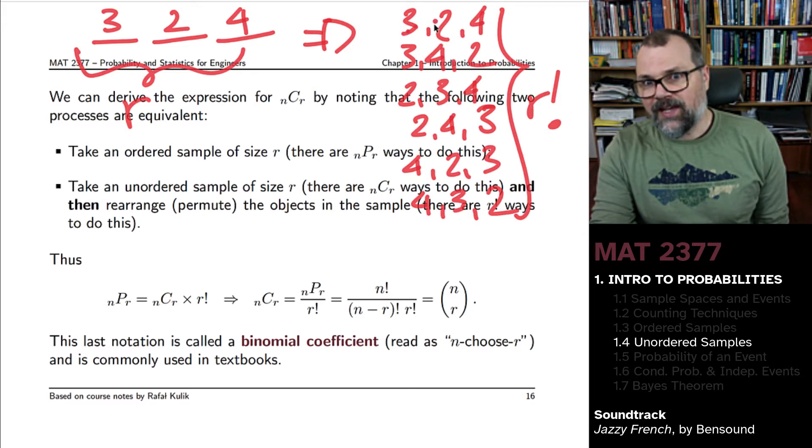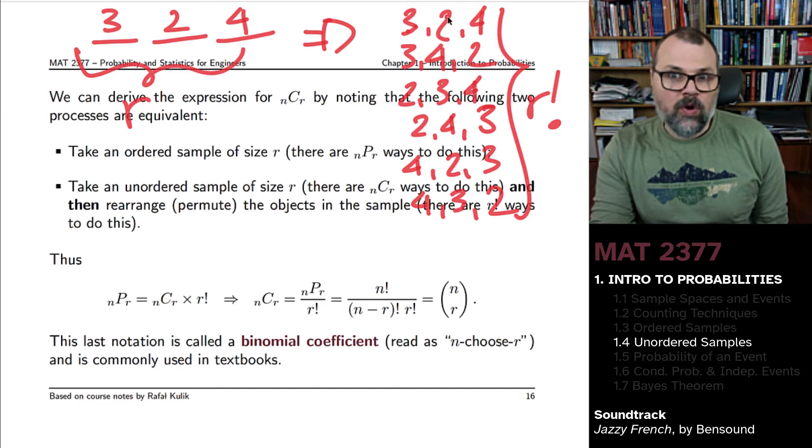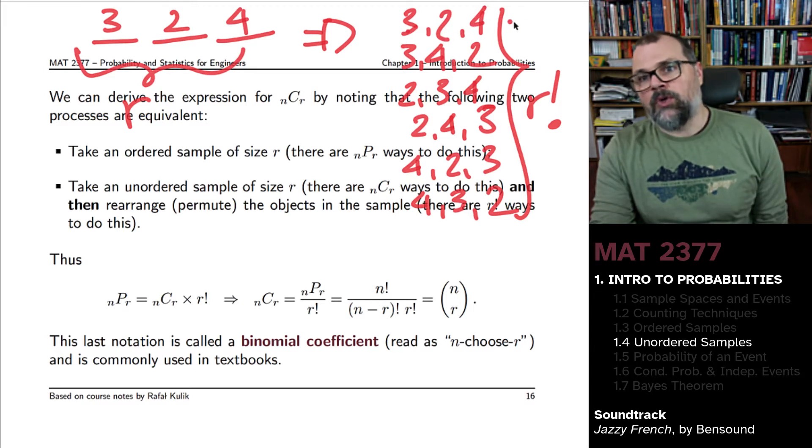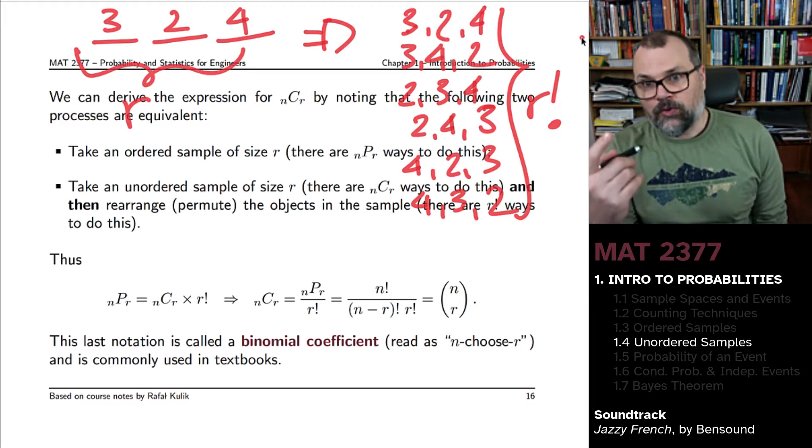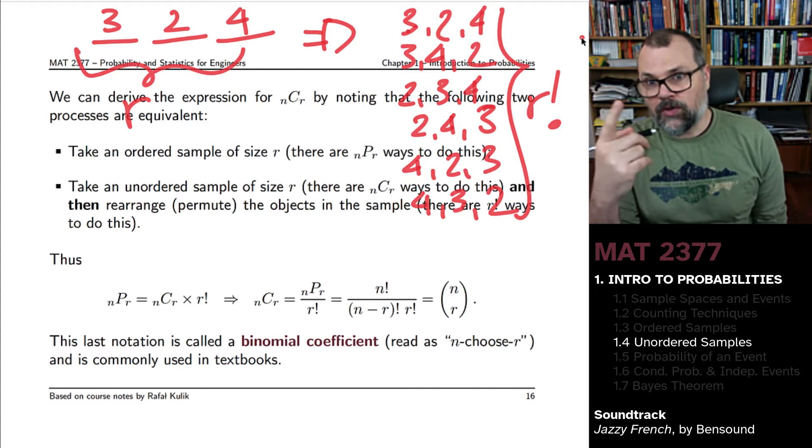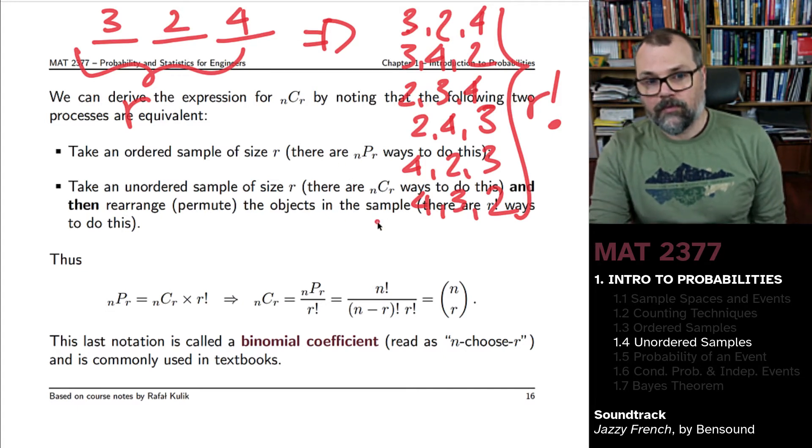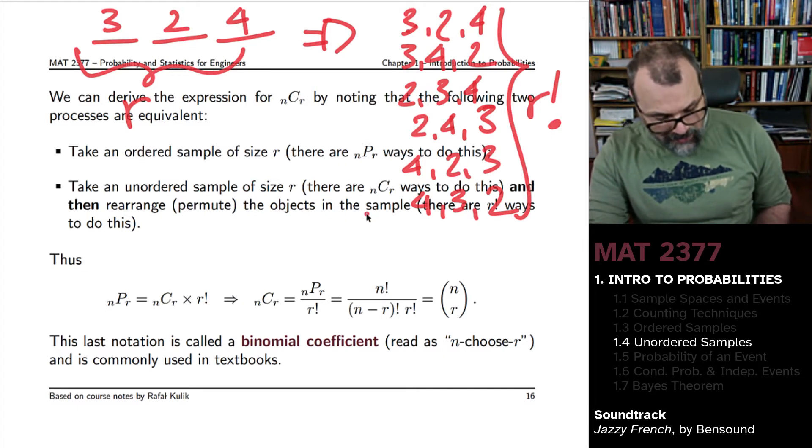Then for the second entry, well, you can't repeat the one you had before, so there's going to be one fewer choices than the one you started with. r-1, and r-2, and all the way down until your last choice, there's only one choice left open to you.